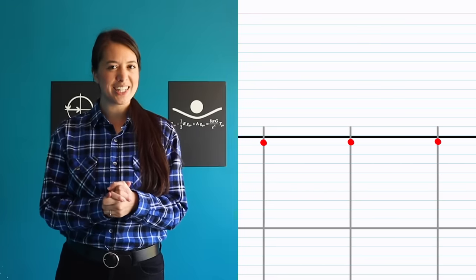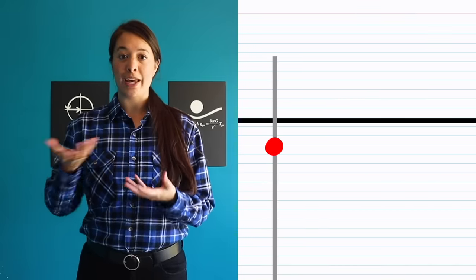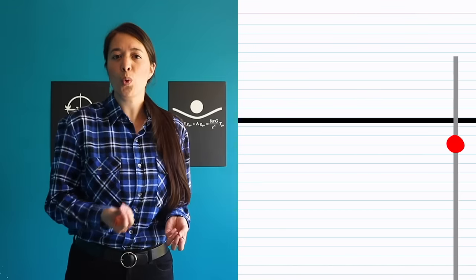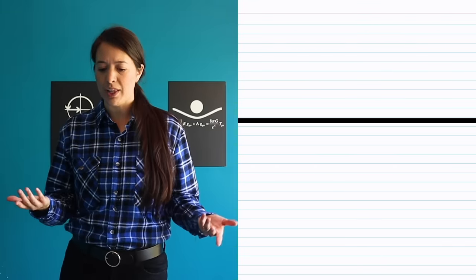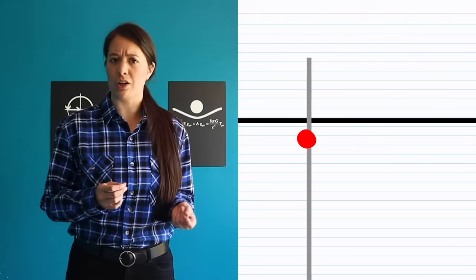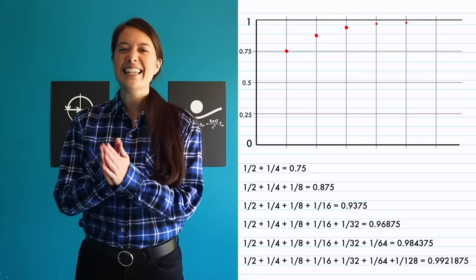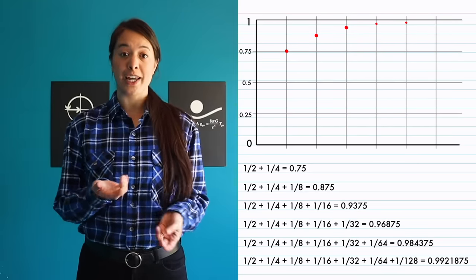But how do we know for sure? No matter how many terms we add on to the sum by hand, there will always be another one we can add on after that, and then another one, and another one without actually ever reaching 1. It's exactly this type of problem that the limit was created to deal with.